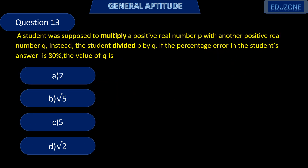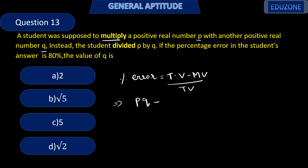A student was supposed to multiply a positive real number P with another positive real number Q. Instead, the student divided P by Q. If the percentage error in the student's answer is 80%, what is the value of Q? Percentage error is (true value minus measured value) divided by true value. The true value is P into Q and the measured value is P divided by Q.